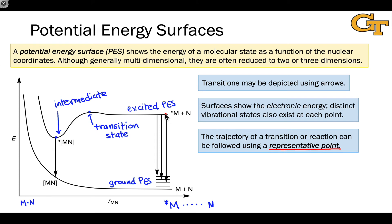So they start out at a large distance from one another. The representative point starts here. As the molecules approach one another, the representative point moves along the excited state potential energy surface in this direction. And at some point, the ensemble of M and N reaches a critical point right here where we are now at an intermediate structure.